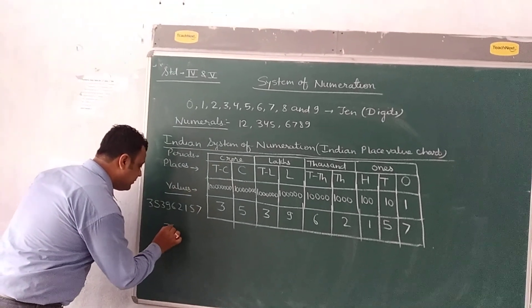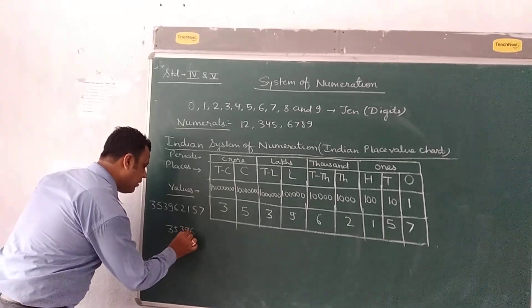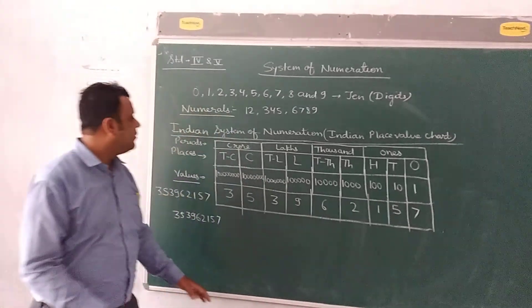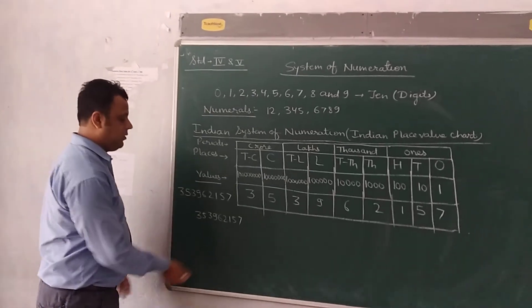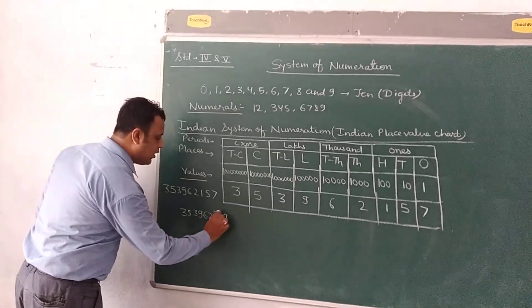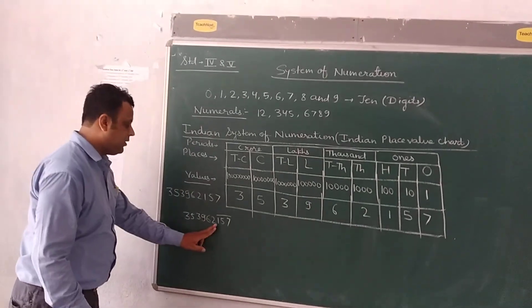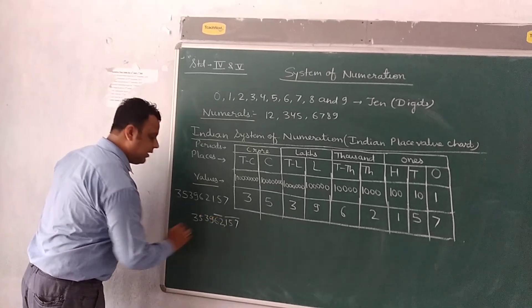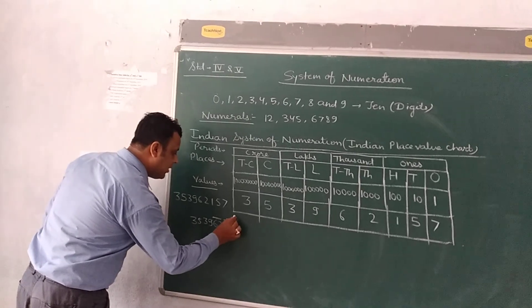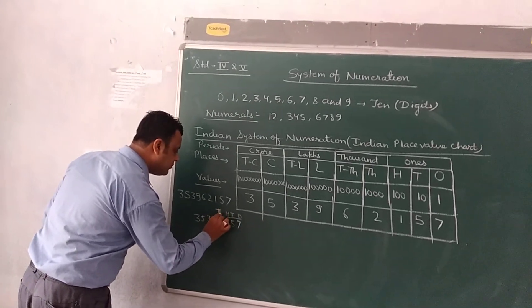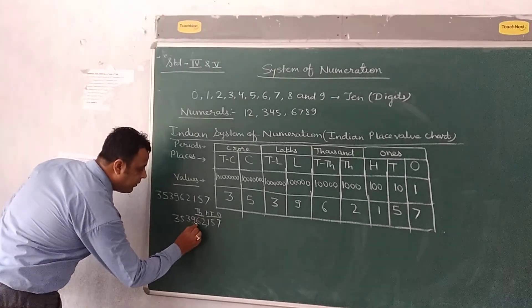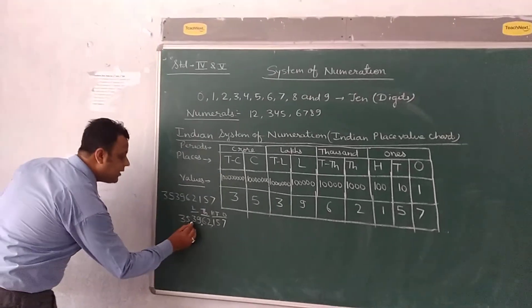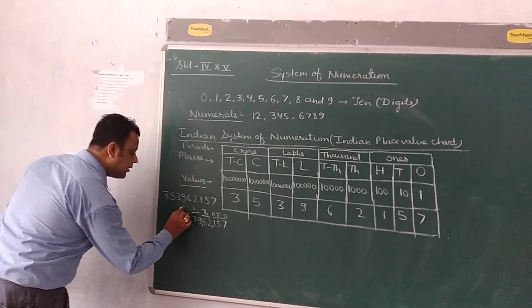For writing this number in words, we have to put a comma or keep a space between two periods. The first three digits — ones, tens, hundreds — form the period 'Ones,' so we put a comma after three digits. Then thousands and ten thousands come in one period, so we put a comma after those. After that, lakh and ten lakh come next, so we put a comma. Then crore and ten crore come in the crores period.